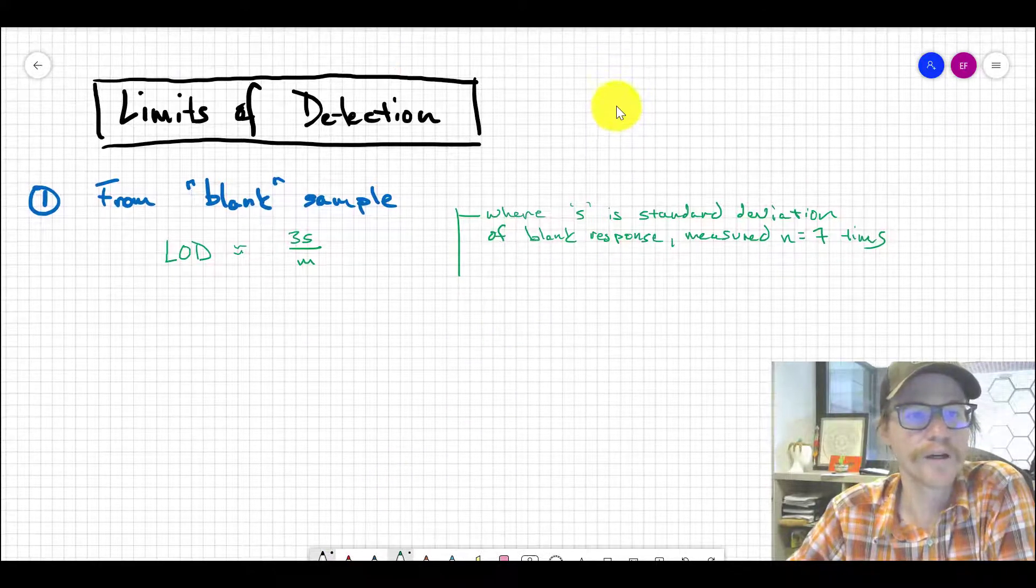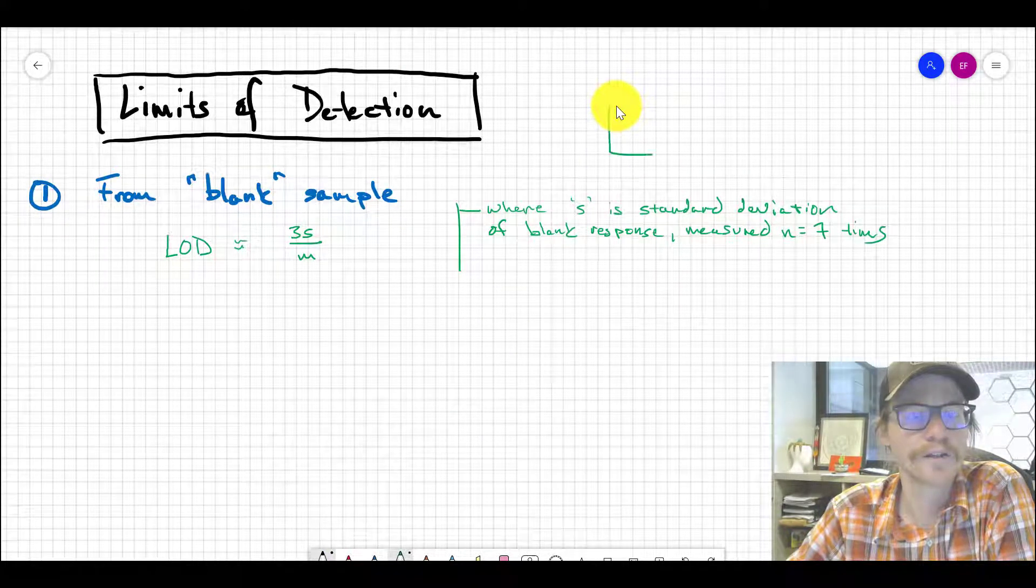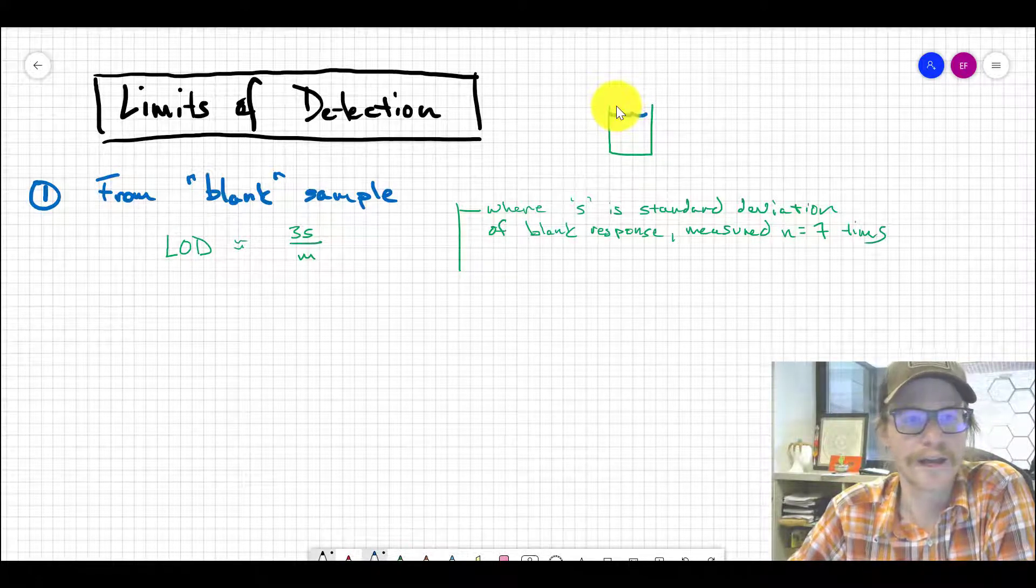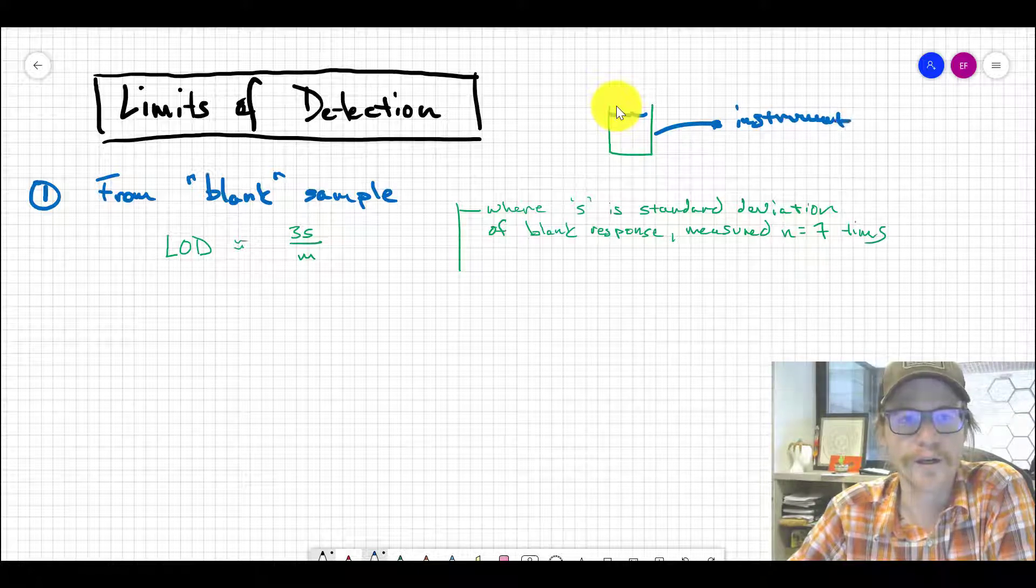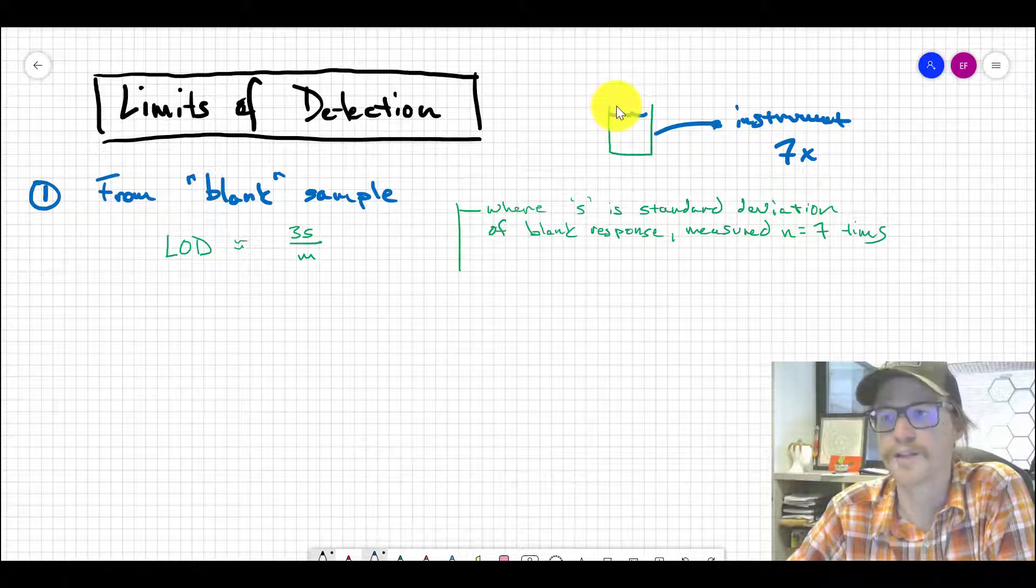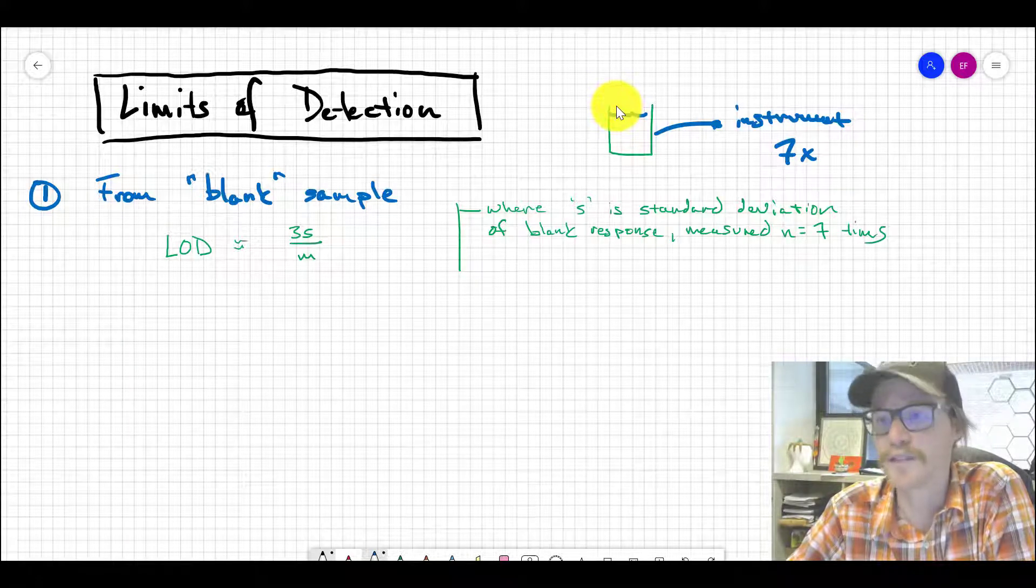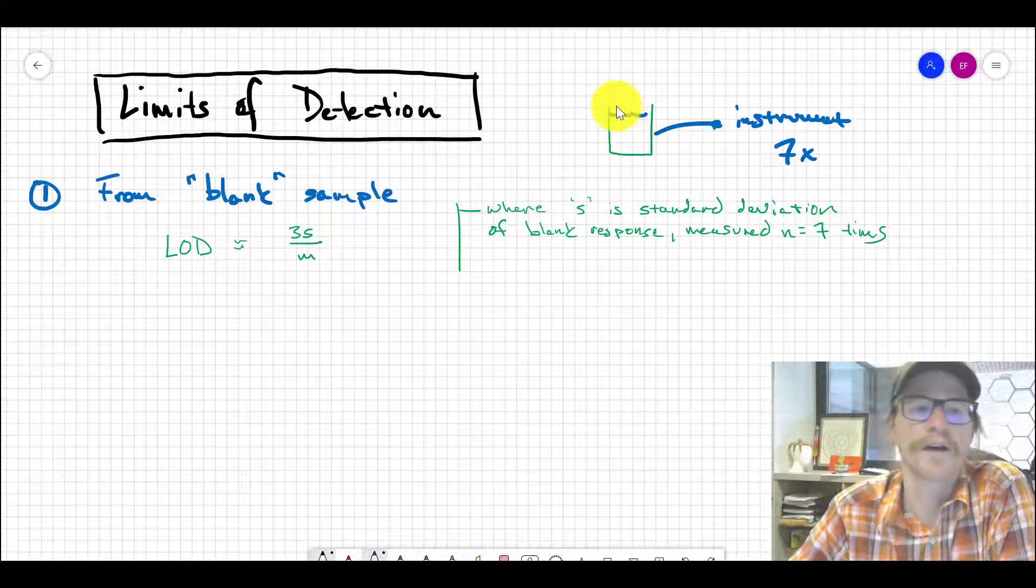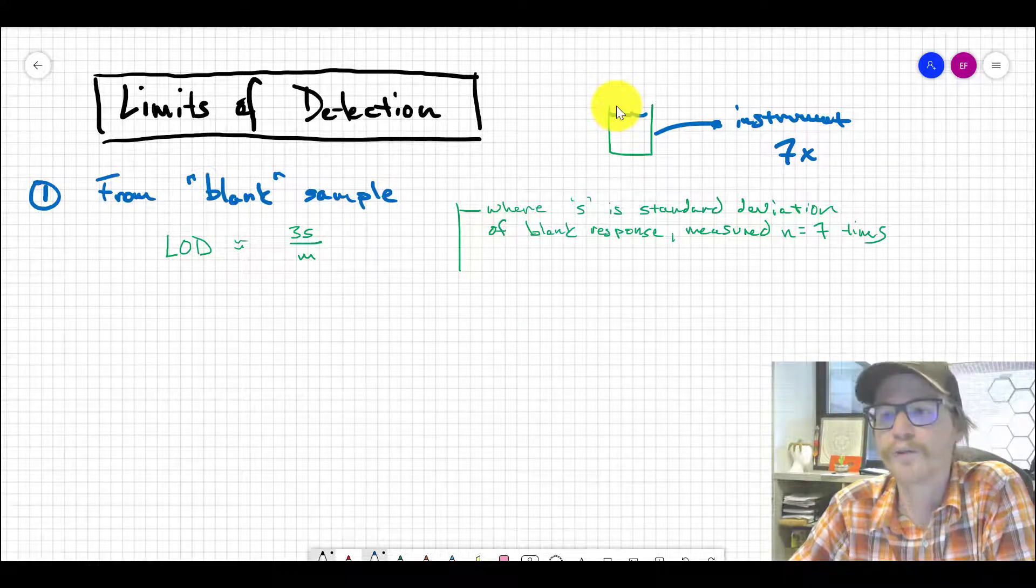You'll take that blank solution and put it into your instrument. You're going to measure it seven times—the same exact blank—which gives you seven measurements. You'll take the standard deviation of those measurements and compute...